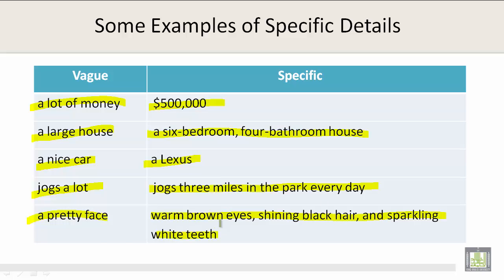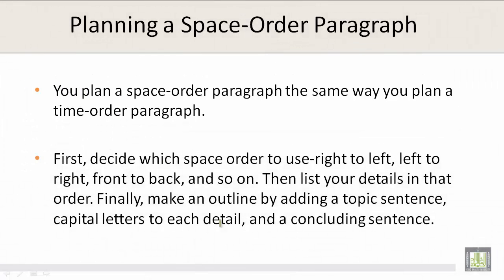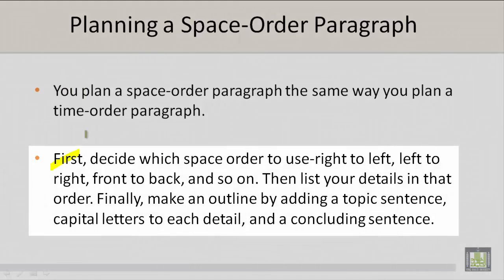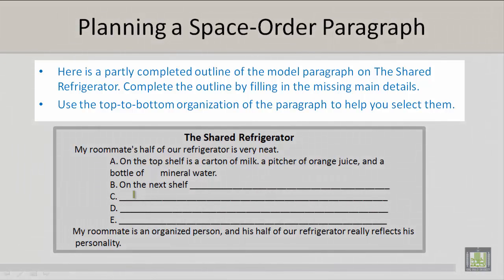You plan a space order paragraph the same way you plan a time order paragraph. First, decide which space order to use: right to left, left to right, front to back, and so on. Then, list your details in that order. Finally, make an outline by adding a topic sentence, capital letters to each detail, and a concluding sentence.